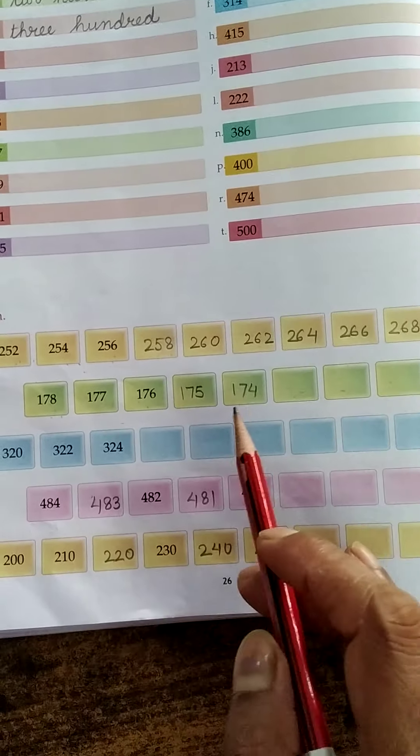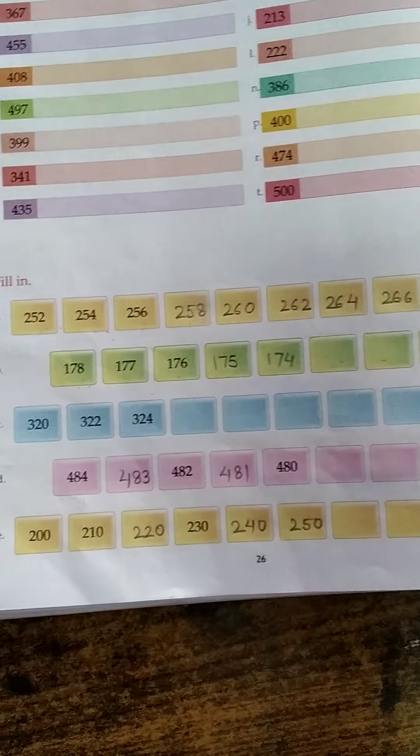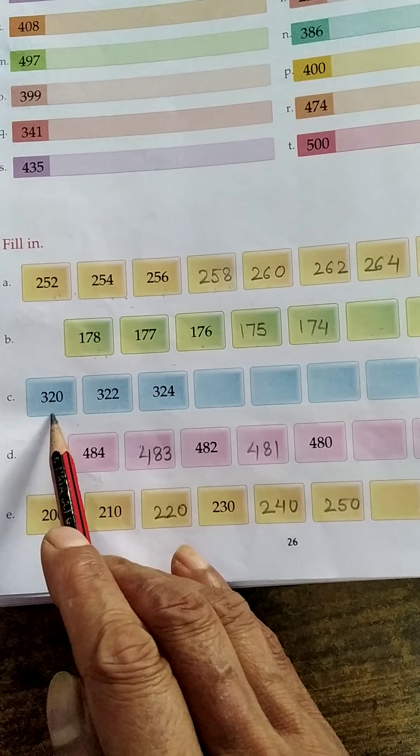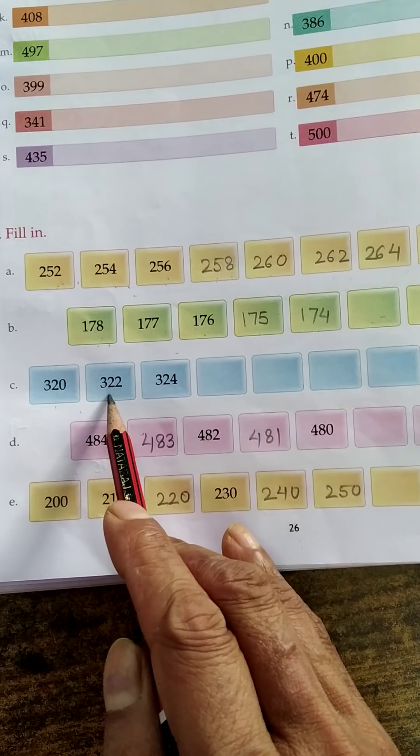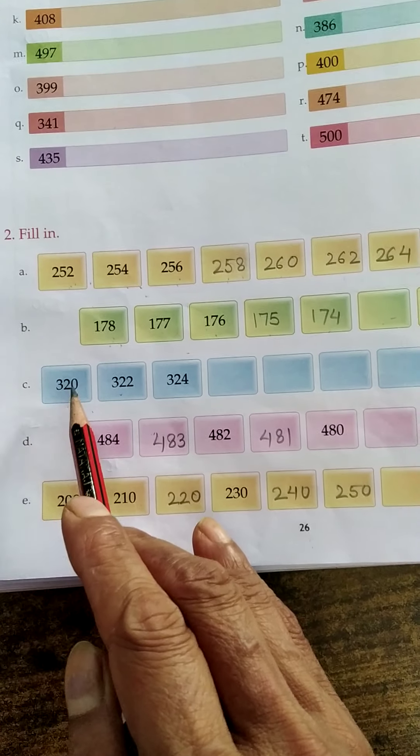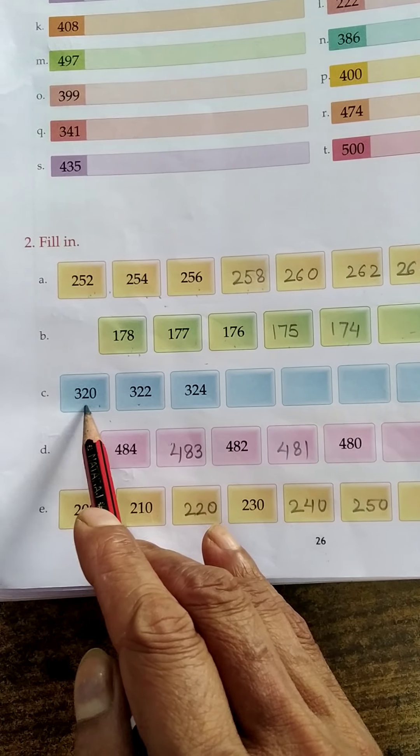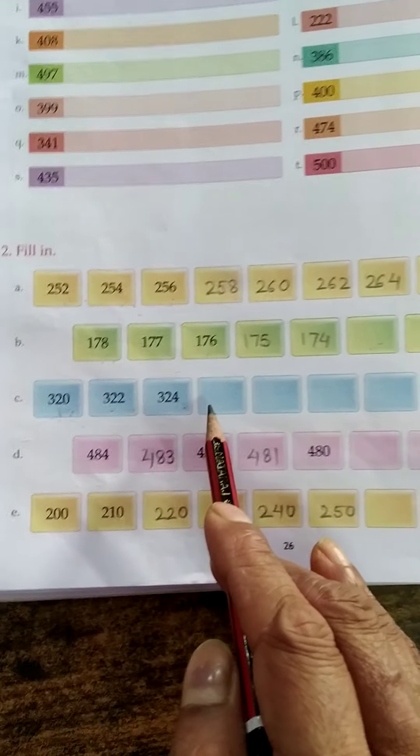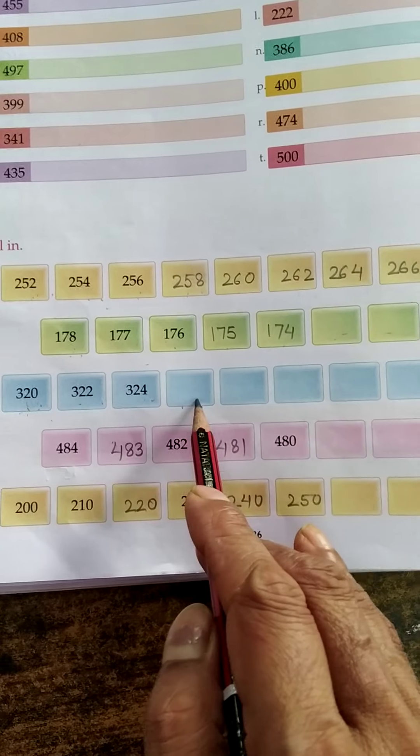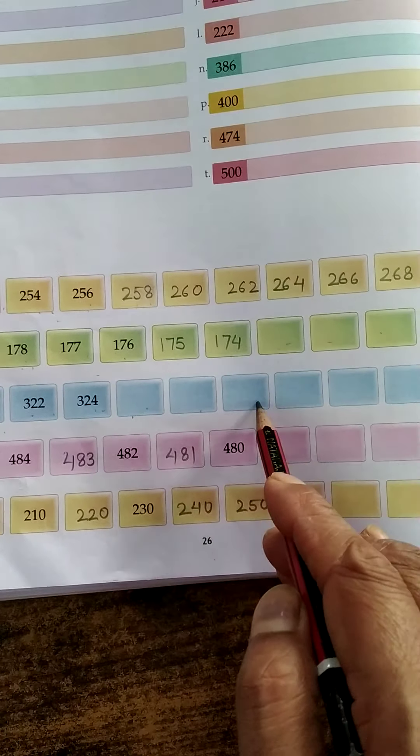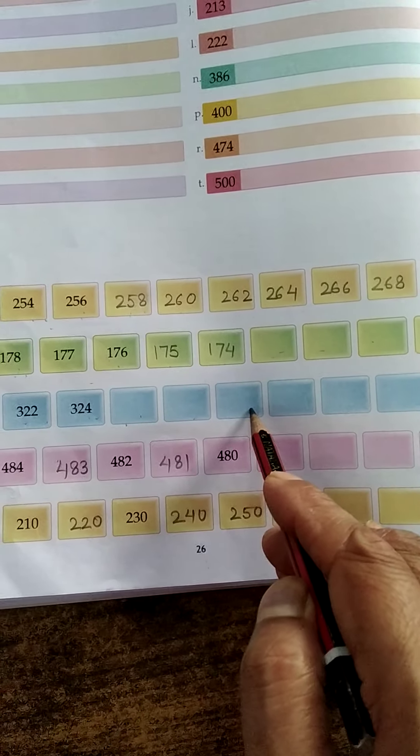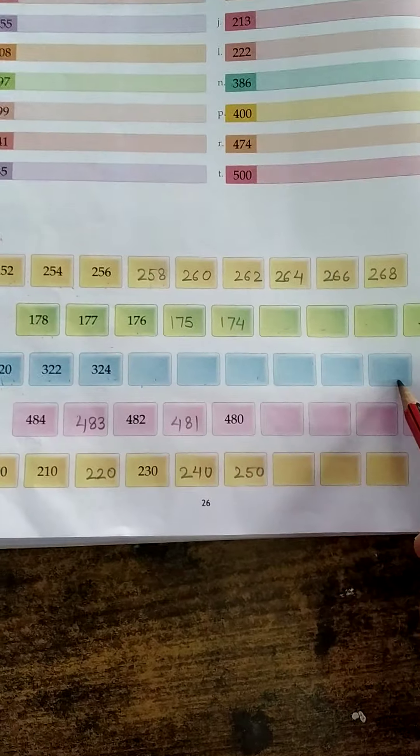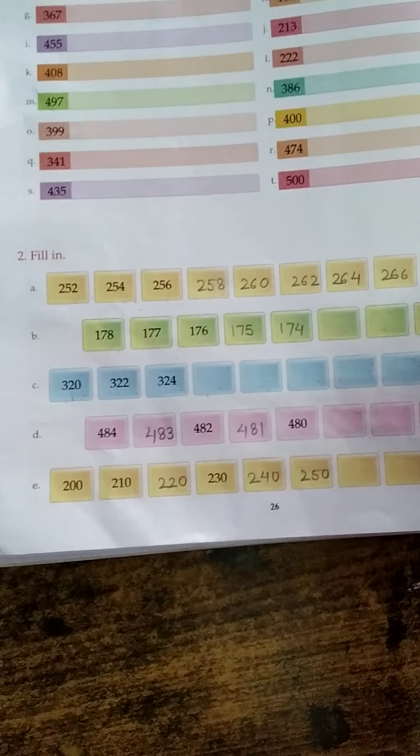I have explained you. You have to do yourself. 320, Exercise number C. 320, then 322. You have to add 2 numbers. 320, 322. Again 2: 324, 326, 328, 330, 332, 334, 336. Understand? Everyone I have to understand. Of course, yes.